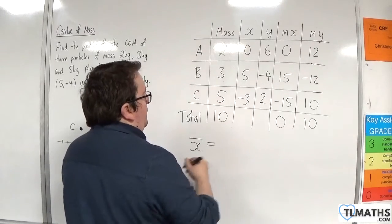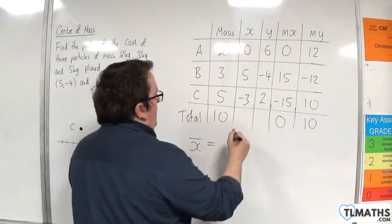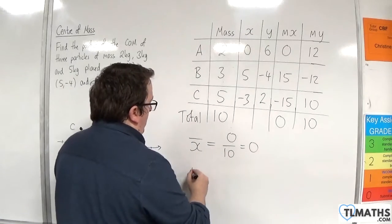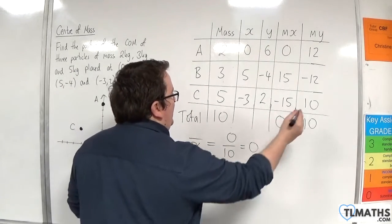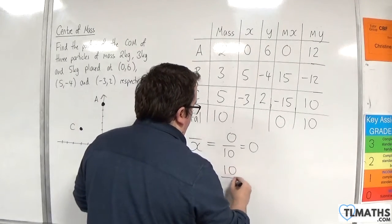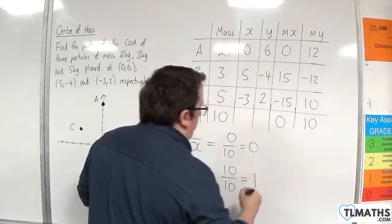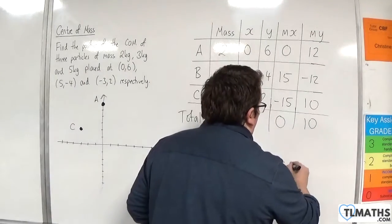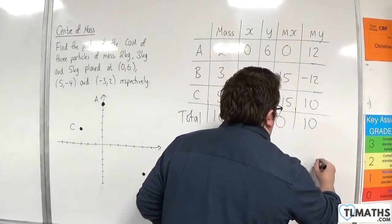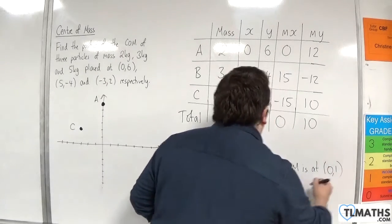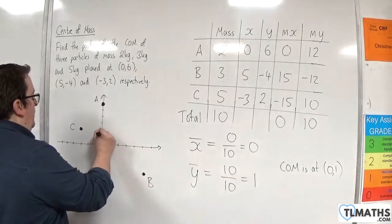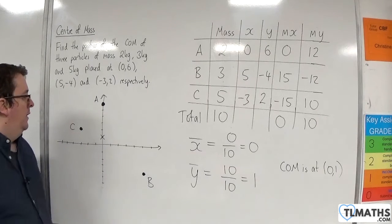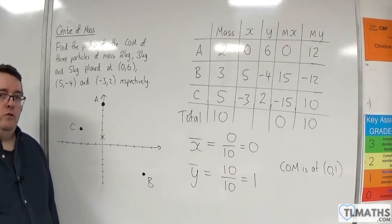So the average of the x's is 0 divided by 10, so 0, and the average of the y's is 10 divided by 10, which is 1. So that means that the centre of mass is at 0, 1. So the centre of mass is there. And that makes sense, given the diagram that we drew.